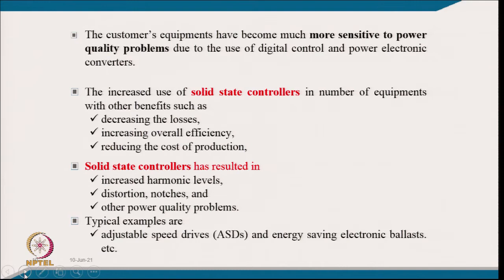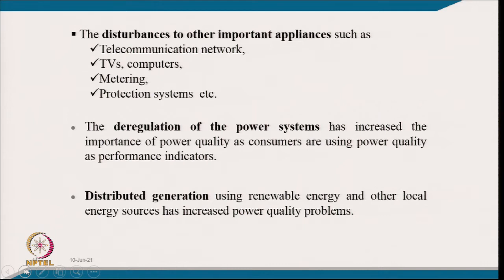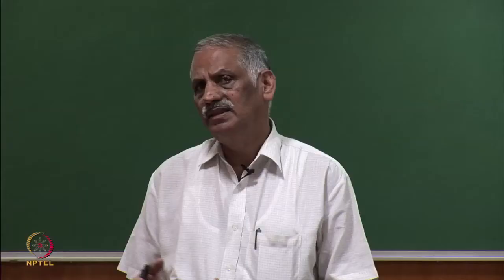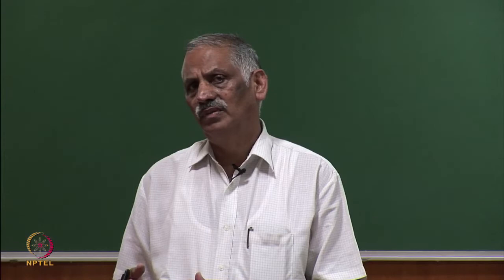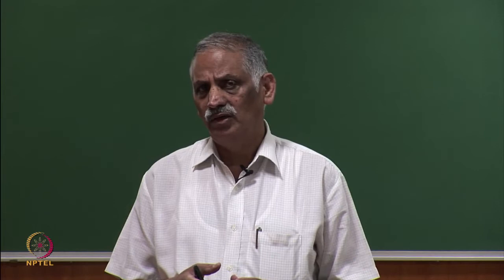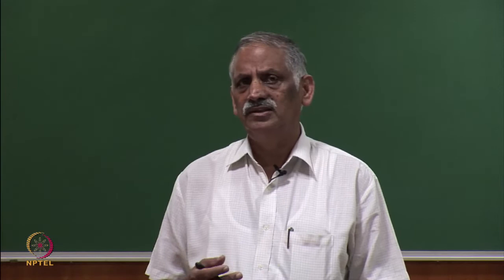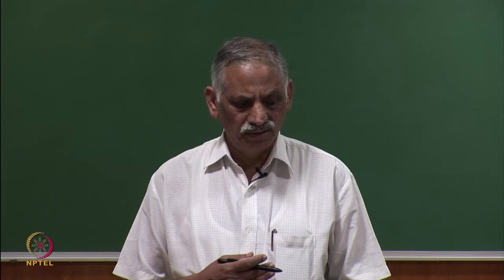Disturbances to other important appliances include telecommunications networks, TV, computers, metering, and protection systems. Some equipment drawing non-sinusoidal or harmonic current distorts the voltage at the point of common coupling through source impedance, affecting neighboring consumers and neighboring equipment — another aspect of the state of art on power quality.